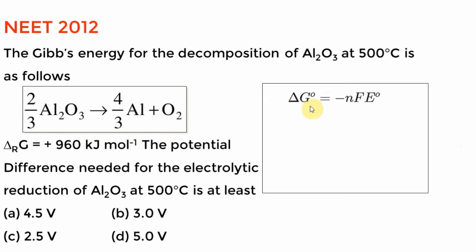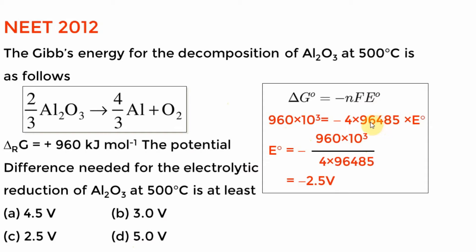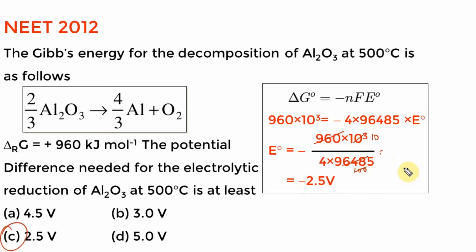Once you figure out n = 4, the question is simple: ΔG = −nFV. ΔG is given, F = 96,485, and n = 4. You can approximate F ≈ 96,000. So 960,000 / (4 × 96,000) ≈ 2.5 volts. We can always approximate — the answer choices are far apart.